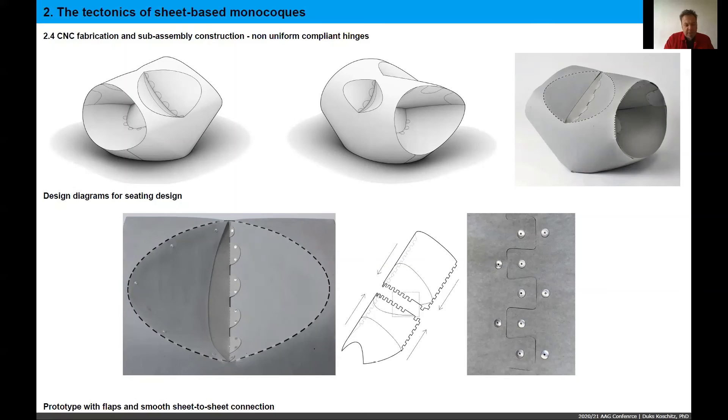And the bottom right illustrates how two sheets are coming together along the finger joint with rivets since we needed to make sure that we have common tangency surfaces.